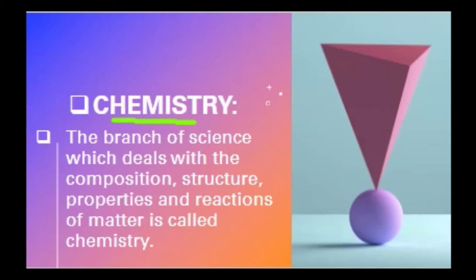All are branches of science because scientists have divided science into its various branches for easy study. One of those branches is chemistry. So, what is chemistry? Chemistry is the branch of science which deals with the composition, structure, properties, and reactions of matter.